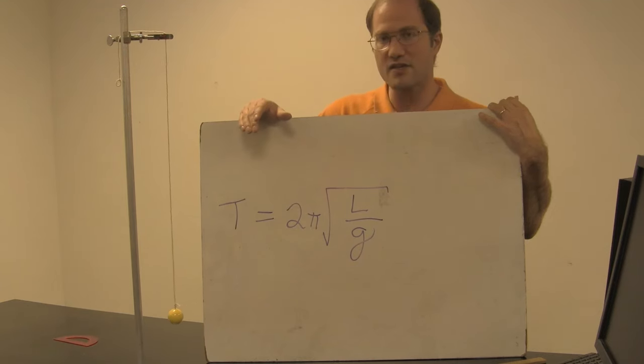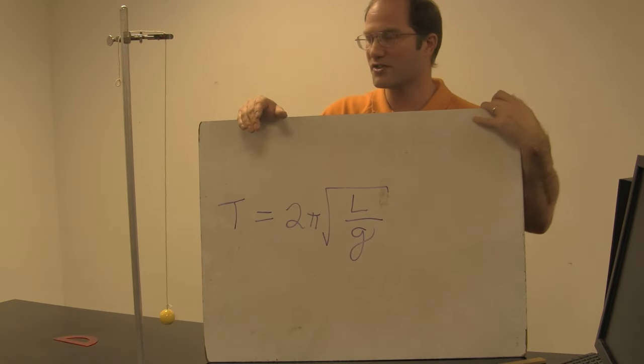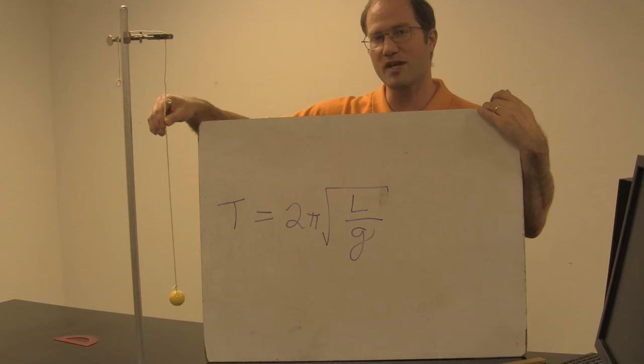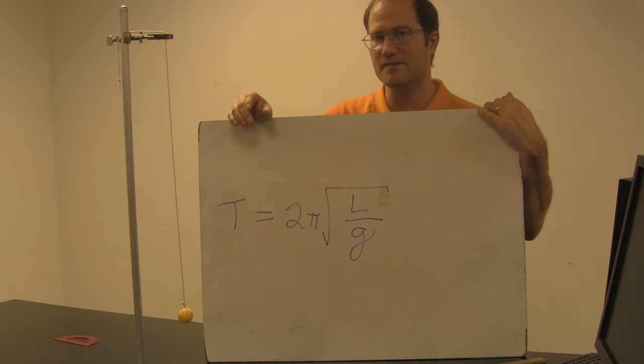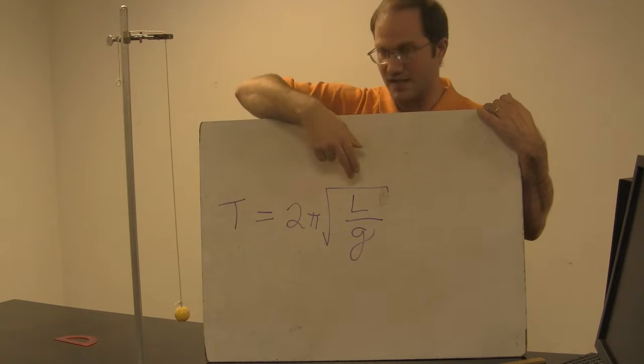Now, you may notice that there is no mass in this equation and that's because the mass of the pendulum is irrelevant to the period. It could be twice as massive and still have the same period. All that matters is the length and g.